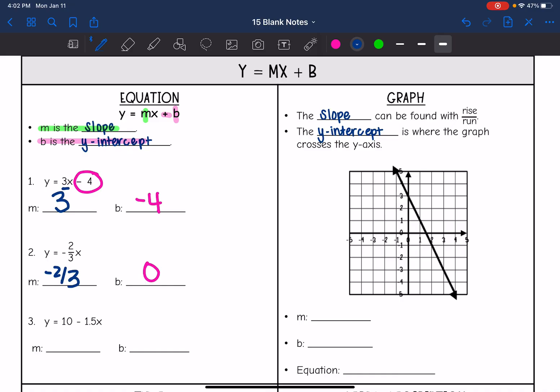On number 3, we have y equals 10 minus 1.5x. This one is written out of order, but remember the slope is still the number in front of x. So the slope is negative 1.5. And then the y intercept is the number by itself, which is 10, and that would be a positive 10 since it does not have a negative sign in front of it.